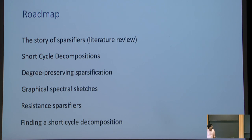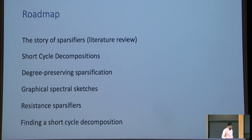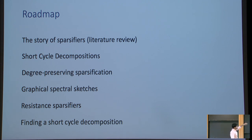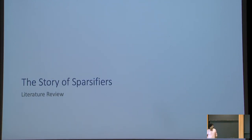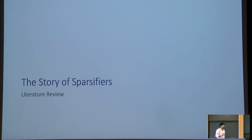Here's a rough outline. We'll begin with the story of graph sparsifiers — a fascinating area in spectral graph theory that came largely from an algorithmic perspective, kind of beginning in the late 90s and early 2000s. I'll introduce the decomposition, give simple applications, and then talk about how to construct these decompositions fast.